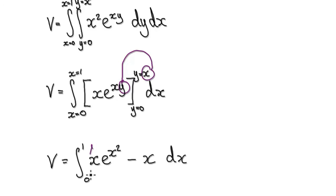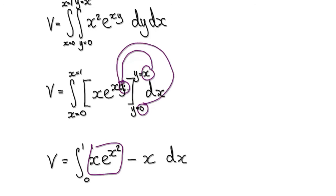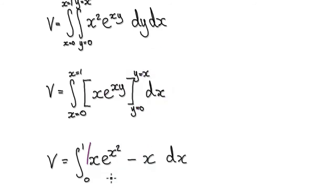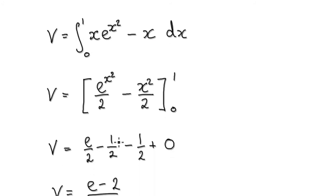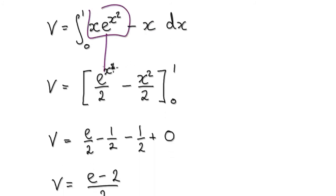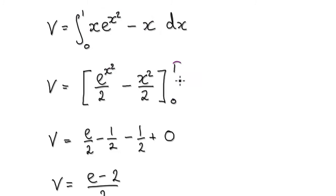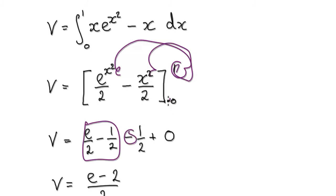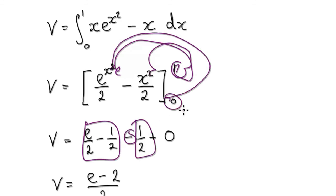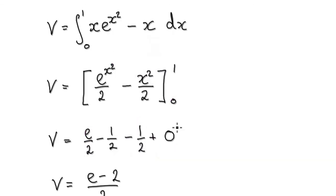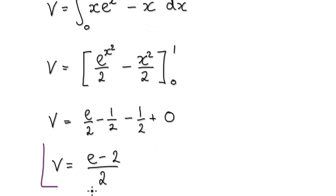We evaluate from y equals 0 to x: substituting y equals x gives x·e^(x²), and y equals 0 gives x·e^0 which is x. Then integrating that from x equals 0 to 1, putting 1 in gives the result, taking away the value at 0 gives 0 overall. And that is your final answer.